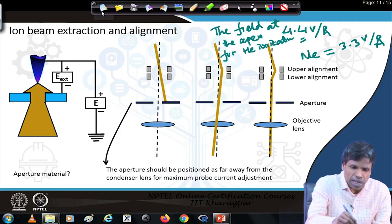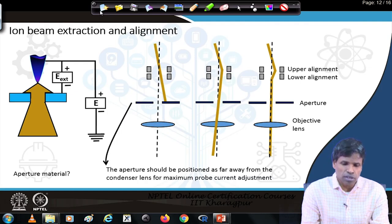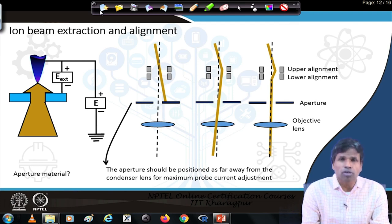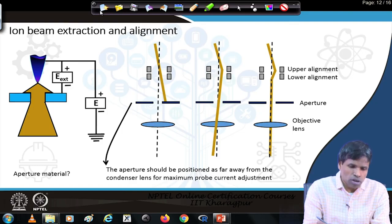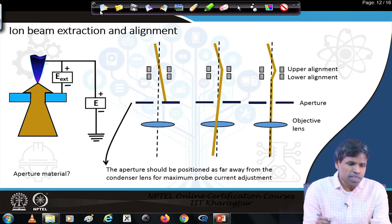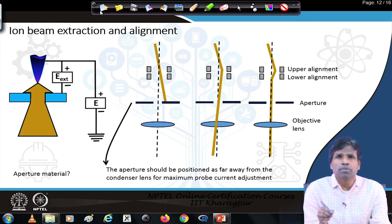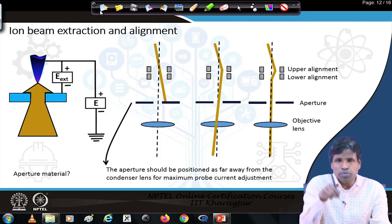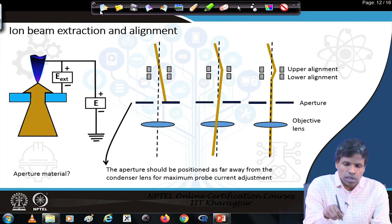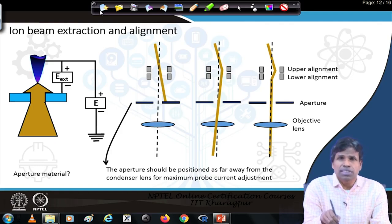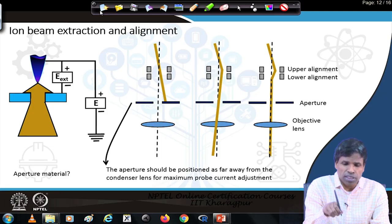Once the ion beam is generated by applying the optimum potential, it must be aligned so that it comes downwards along the optic axis and reaches the condenser lens. First, alignment is done mechanically by tilting or shifting. We have 3 atoms providing 3 beamlets, but we need only 1 beamlet. So the tip is tilted so that one atom's beam comes downwards through the column, and this mechanical tilting and shifting is done so that the beamlet comes straight downwards.